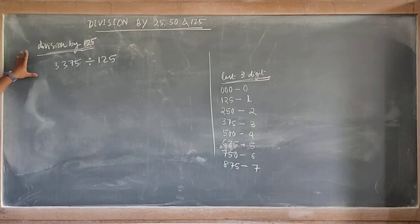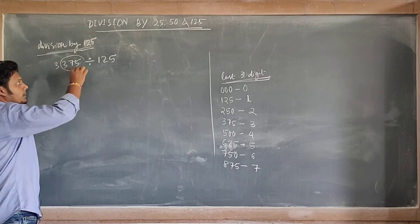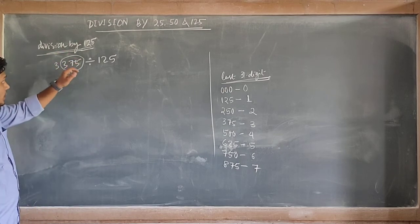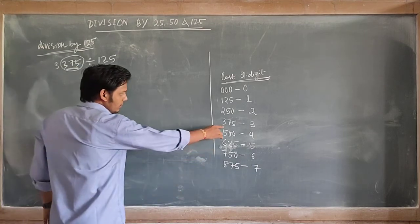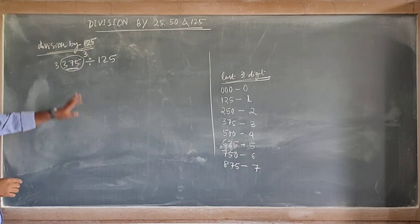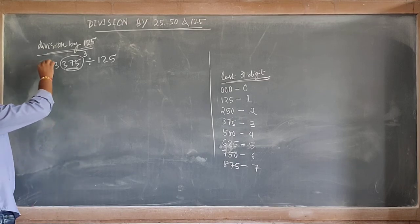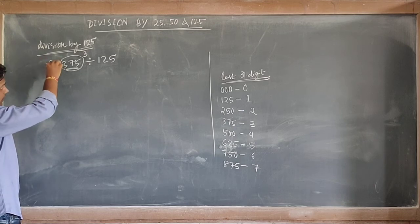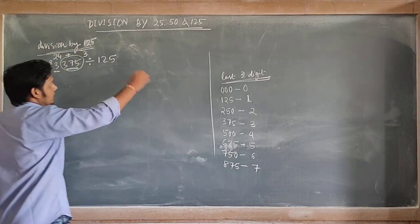In the previous two methods — division by 25 and division by 50 — we separated the last 2 digits, but here we separate the last 3 digits because our divisor is a 3-digit number. Take 3375 divided by 125. Separate the last three digits: 375. The value of 375 is 3, so we add 3. The remaining digit is 3, and we multiply by 8: 3 times 8 is 24. Then 24 plus 3 — the answer is 27.